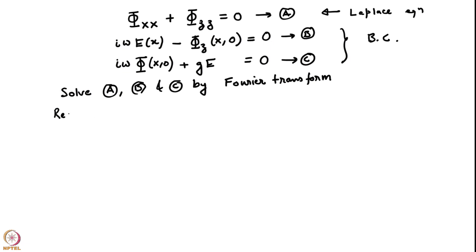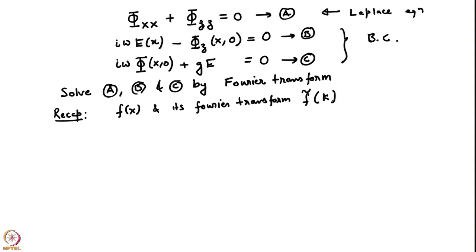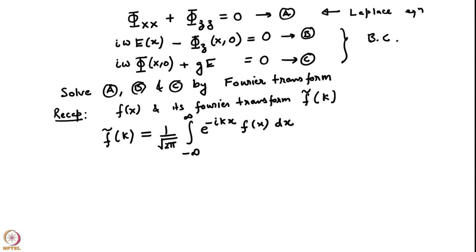Let me define — this is just for recap, so please brush up whatever you have learned about Fourier transforms in your math methods course. If you have a function f(x) and its Fourier transform f̃(k) — we are going from x to k, where k is the wave number space — the Fourier transform f̃(k) is defined by the standard definition I will use.